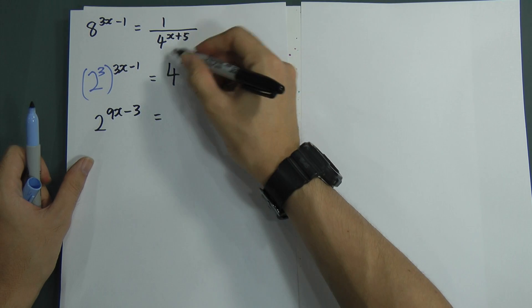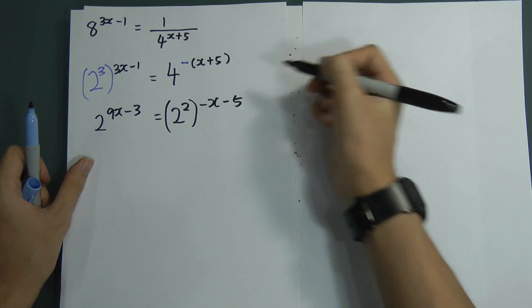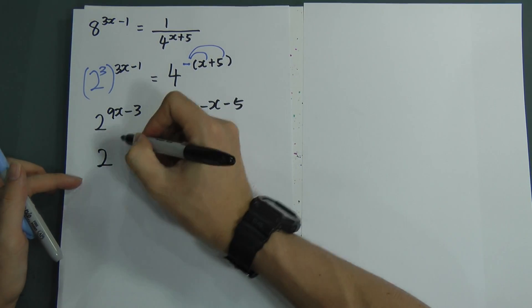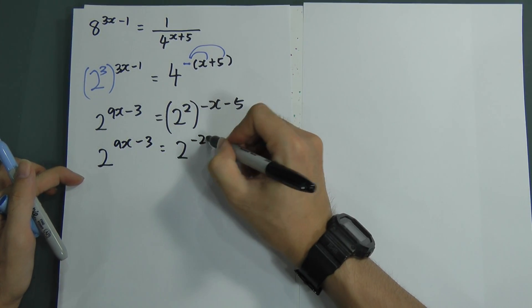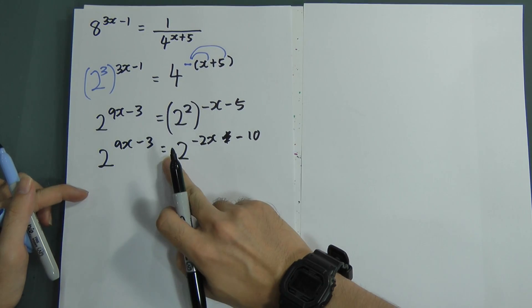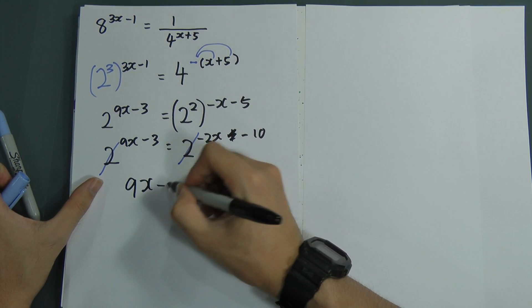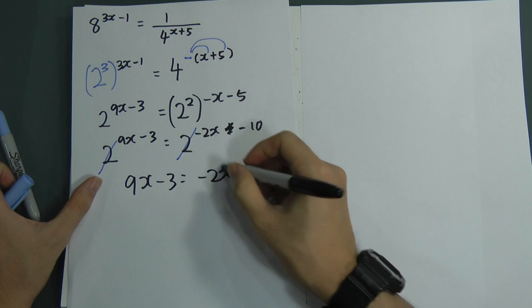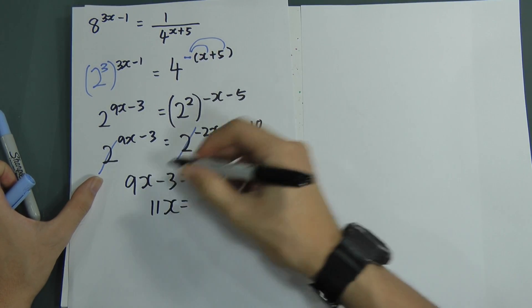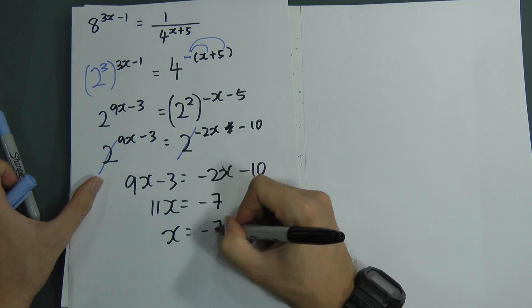I know 4 is actually 2 to the power of 2, and I multiply the negative in. I will get negative x minus 5, multiplying into both. So I expand: 2 to the power of 9x minus 3 equals to 2 to the power of negative 2x minus 10. Now, whenever you have an equal sign in the middle and the same base, you can ignore the base and only compare their powers. Therefore, 9x minus 3 equals to negative 2x minus 10. I move the x term over, so 9x plus 2x gives 11x, equals to negative 10 plus 3, which is negative 7. So x equals to negative 7 over 11.